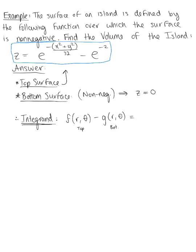So the integrand is the natural exponential raised to the negative quantity x squared plus y squared divided by 32, minus the natural exponential raised to negative 2. That's our top surface, and then we subtract the bottom, which is 0.